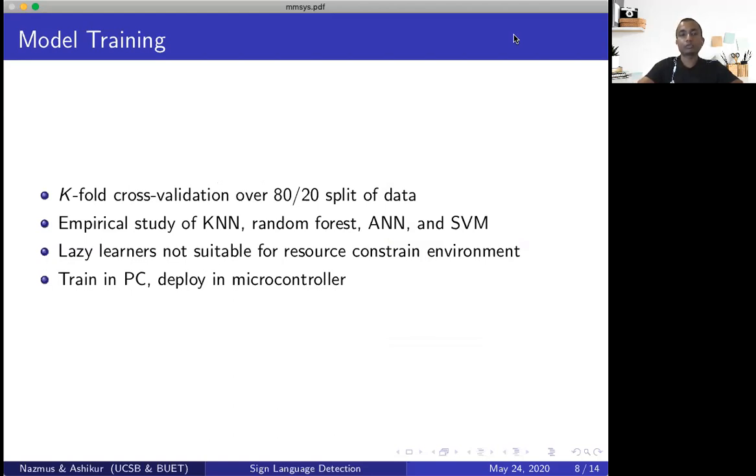So once we have the data, we move on to model training. To train our model, we used K-fold cross-validation over 80-20 split of our data, 80% training, 20% testing. We empirically evaluate the performance of a few machine learning models, namely K-nearest neighbor, random forest, artificial neural network, and support vector machine. So one thing to note here is that lazy learners are not really suitable for resource-constrained environment. However, machine learning models, for example, artificial neural network, we can train those models in a personal computer and just deploy the model in a microcontroller. And that's pretty much what we did.